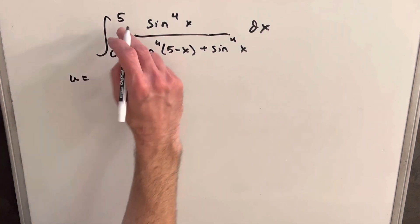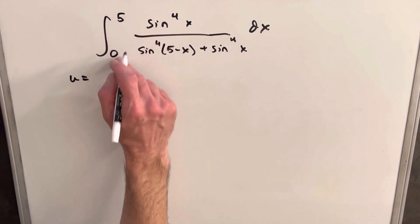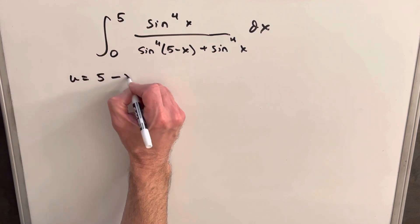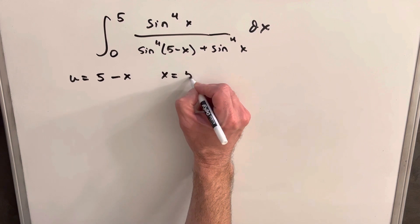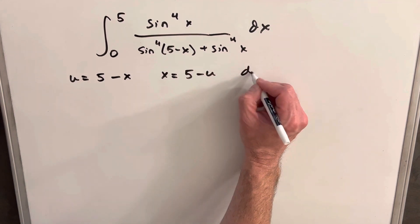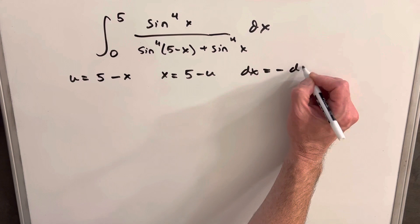So for u, what we're going to do, we're going to substitute the sum of the two bounds, so it's going to be 5 plus 0, which is 5, minus x. And then for x, so then x is going to be 5 minus u. And our dx value is going to be minus du.